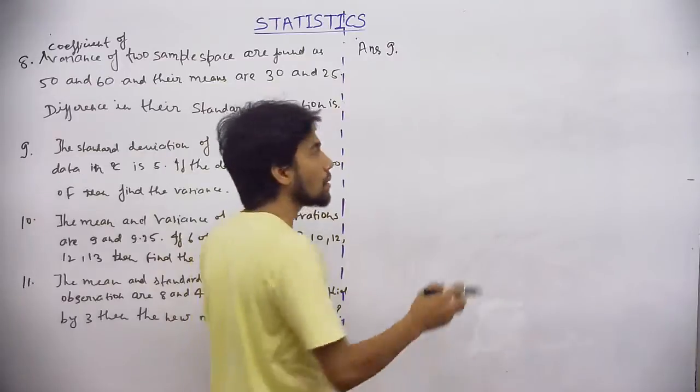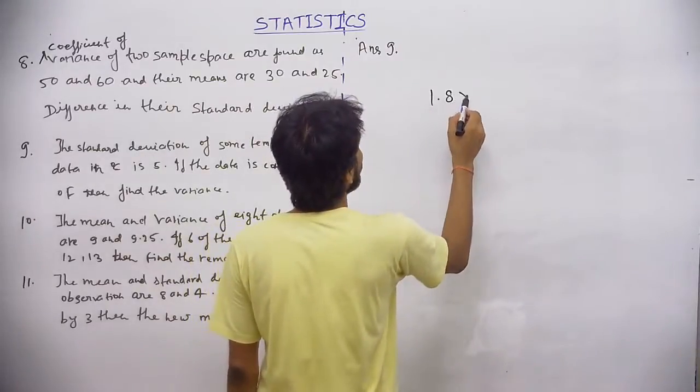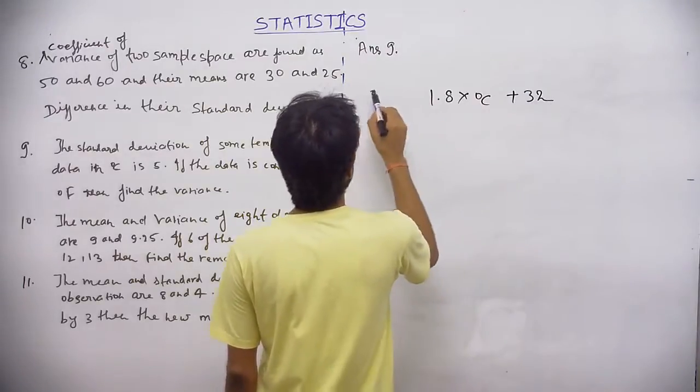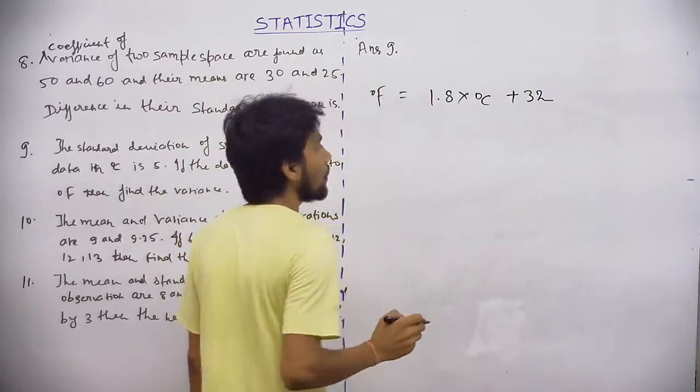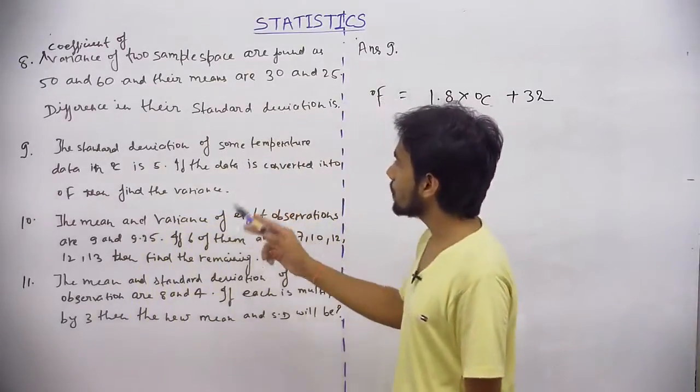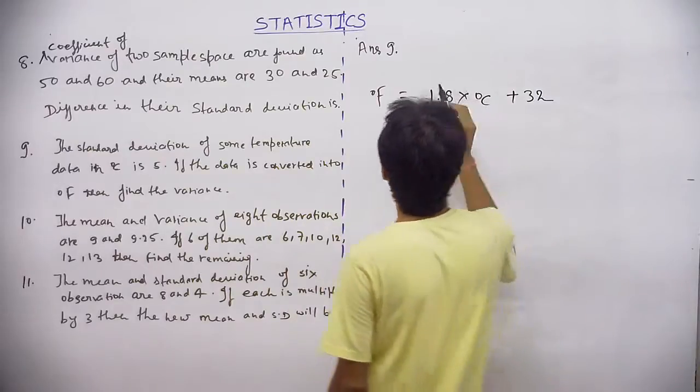Fahrenheit equals 1.8 into degree Celsius plus 32. This is the formula for Fahrenheit. The standard deviation is given as 5, then variance...